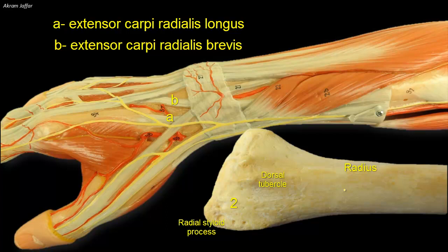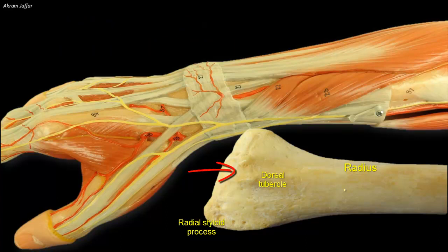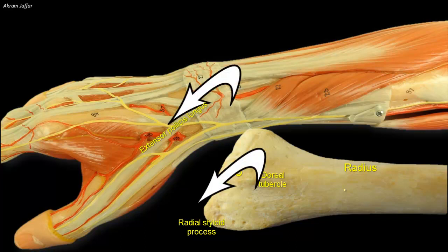On the ulnar side of the dorsal tubercle is a narrow groove which lodges the tendon of extensor pollicis longus. The dorsal tubercle acts as a pulley for this tendon as it changes its direction, forming the posterior boundary of the anatomical snuffbox.